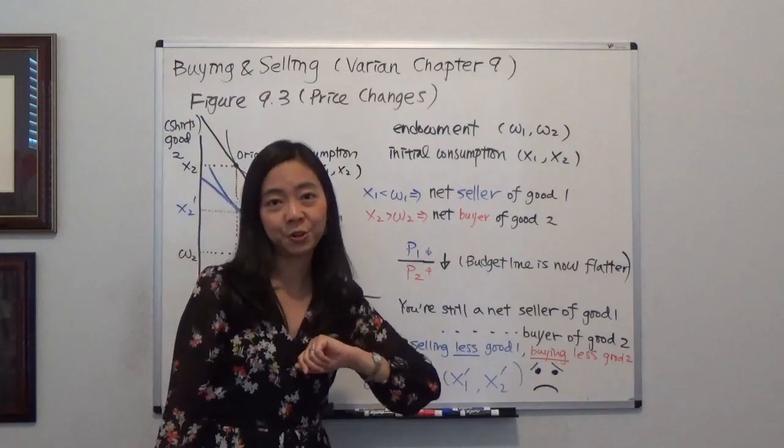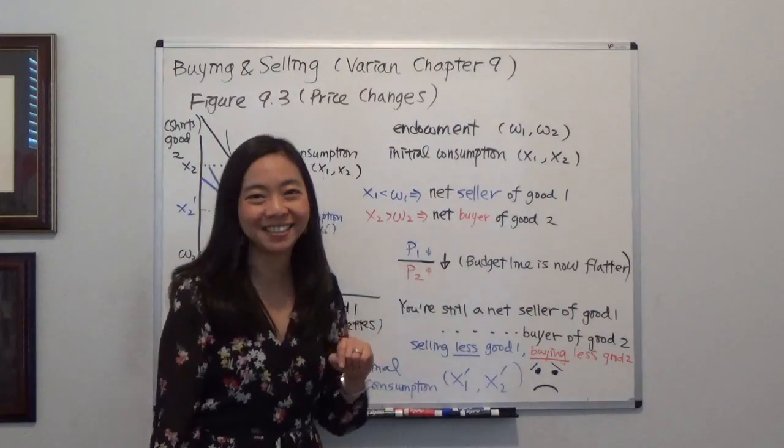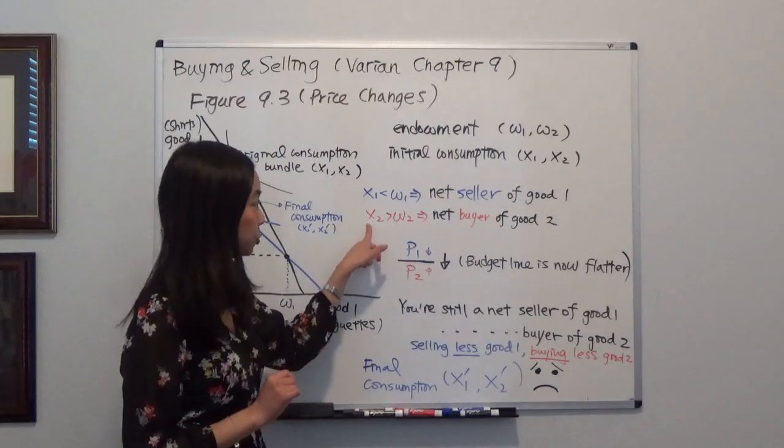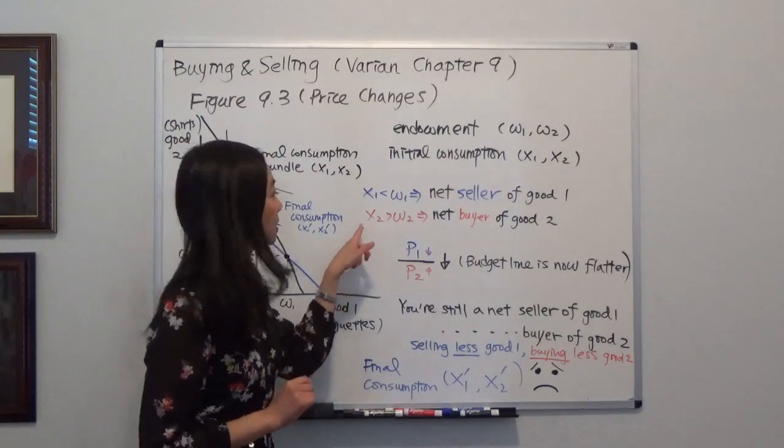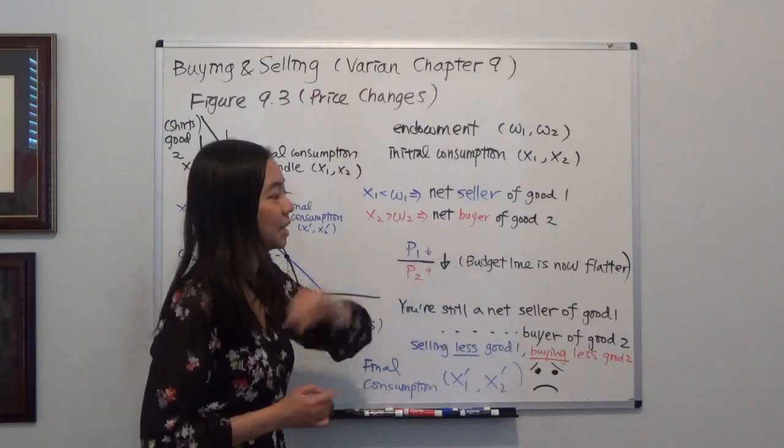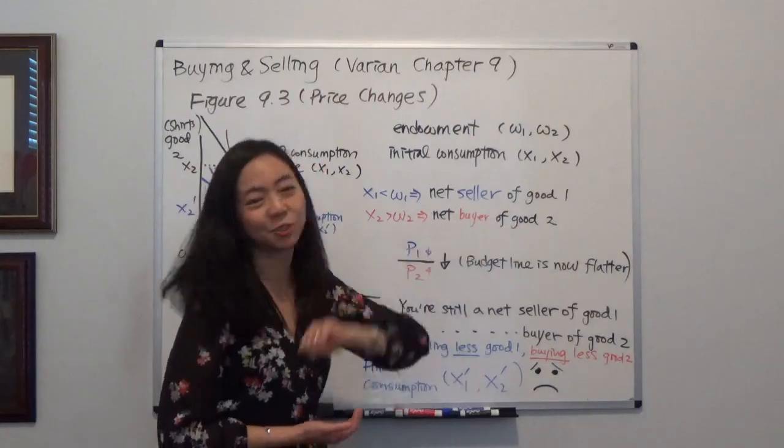Therefore, you're a net seller of good one, the baguettes. And you end up with a consumption bundle x2, the number of t-shirts is higher than your initial endowment of t-shirts. So you're a net buyer of t-shirts, that's your good two.